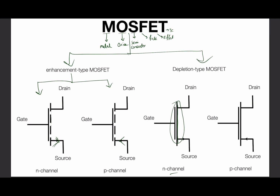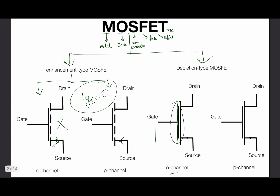The main difference between them is: in the enhancement type MOSFET the channel is not created, but in the depletion type MOSFET the channel is already created. That means for the enhancement type MOSFET, if VGS equals 0, the MOSFET will not work. But for the depletion type MOSFET, if VGS equals 0, current can still flow from drain to source because the channel is already created.